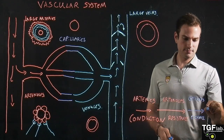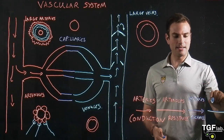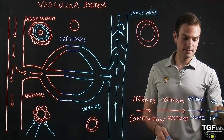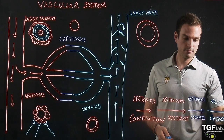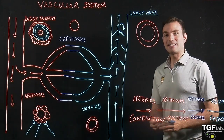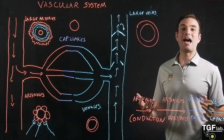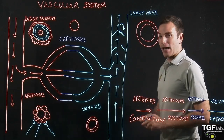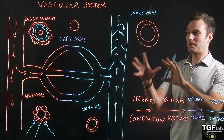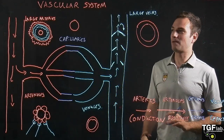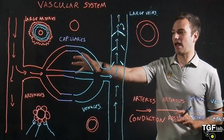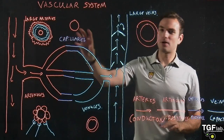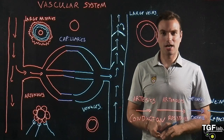Finally, we have the veins and venules, which are the capacitance vessels — low resistance. They are called capacitance vessels because most of the blood in our system is actually held in the veins and venules. We are now going to move on and look in more detail at the regulation of pressure at the different arteries, arterioles, veins, and venules, and also dive deeper into the process of gas and nutrient exchange at the capillary bed.